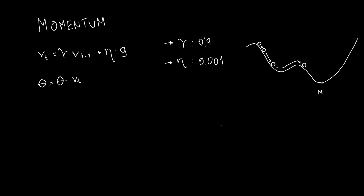So now let's code it. Before we code it, we need to know that the velocity value needs to be stored. And how will we do that? Using a sparse map.